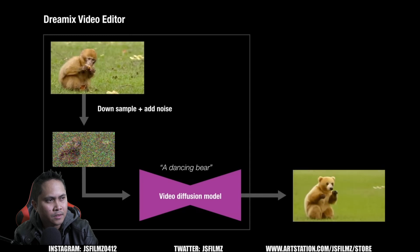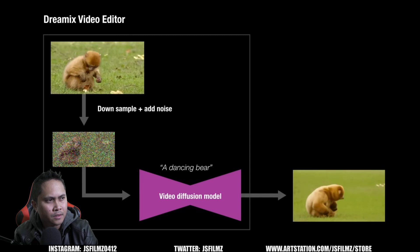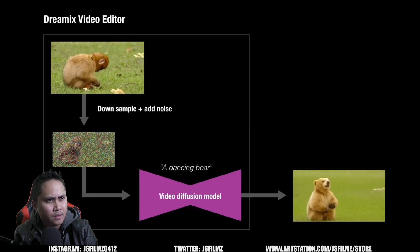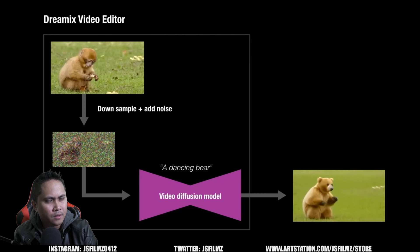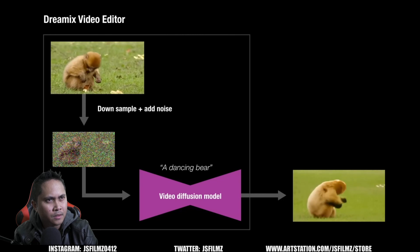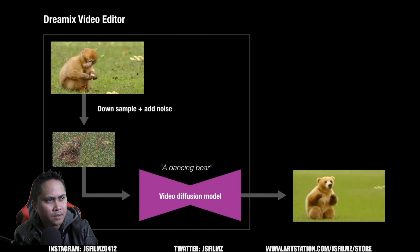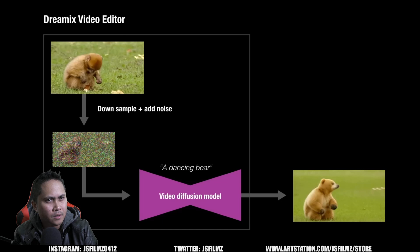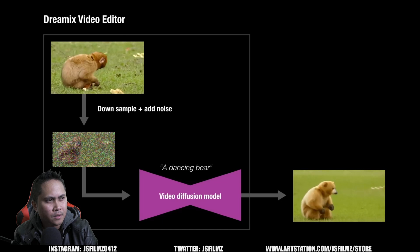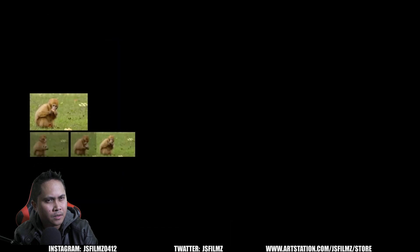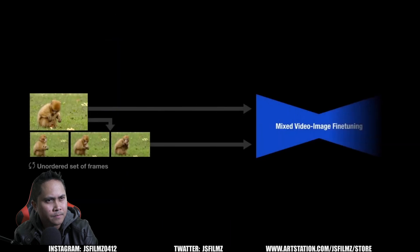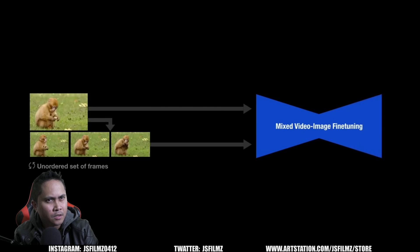This process enables the model to reimagine details that align with the text prompt while preserving the attributes of the original video. The most naive solution is to fine-tune the model on the input video; however, this limits the motion change.